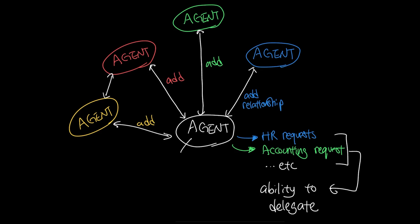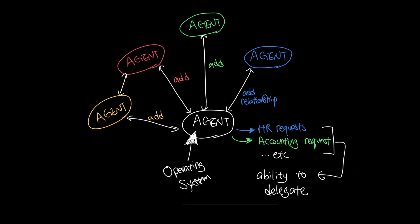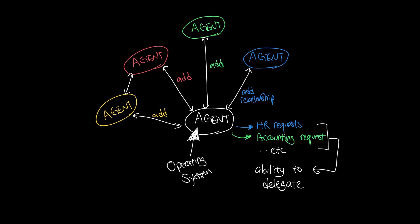In other words, agents could be acting as an operating system and software is rather built around this new OS. What do you think about how the software industry will look like with the embracement of AI and agents?